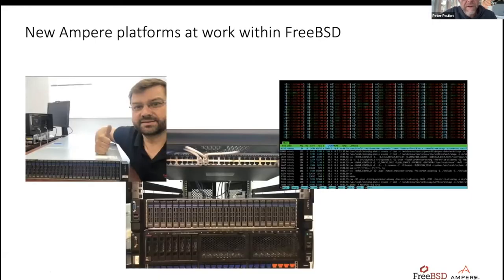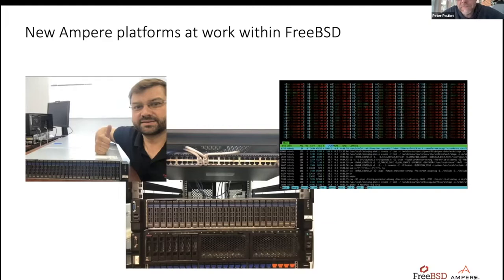This year we donated a couple of new platforms to the FreeBSD Foundation to help developers work on FreeBSD. What you're looking at is one of our Mount Collins platforms — one is on Ed's desk and one is racked. It's a pretty view of all the sexy cores now available for development. That platform has 160 cores across two sockets.